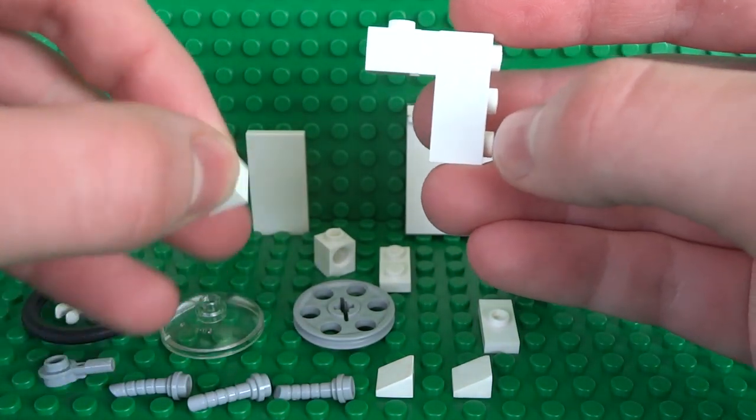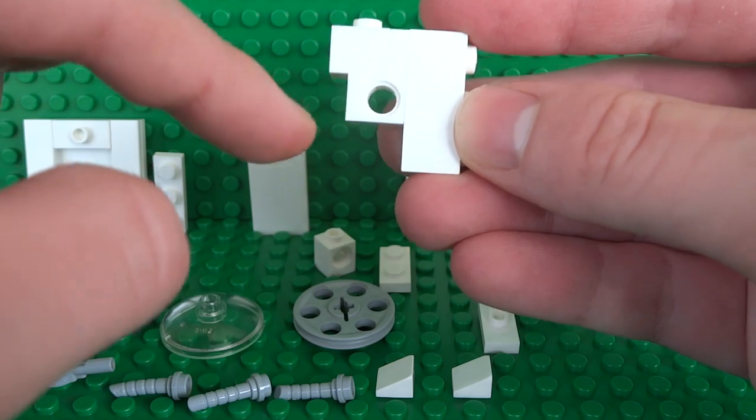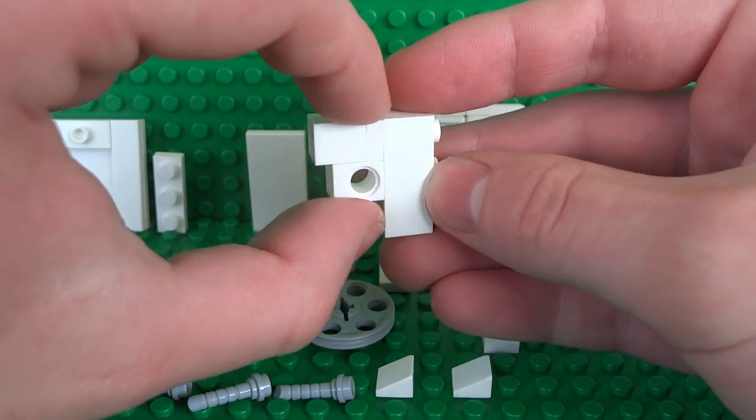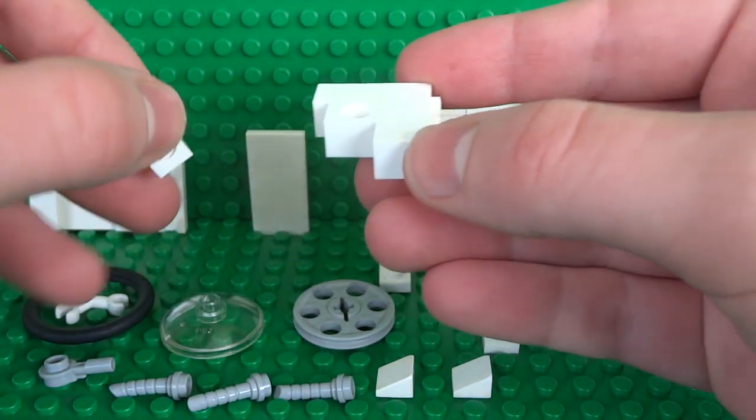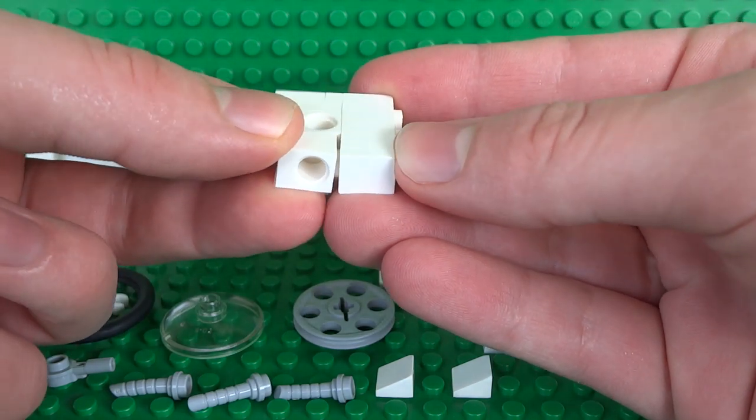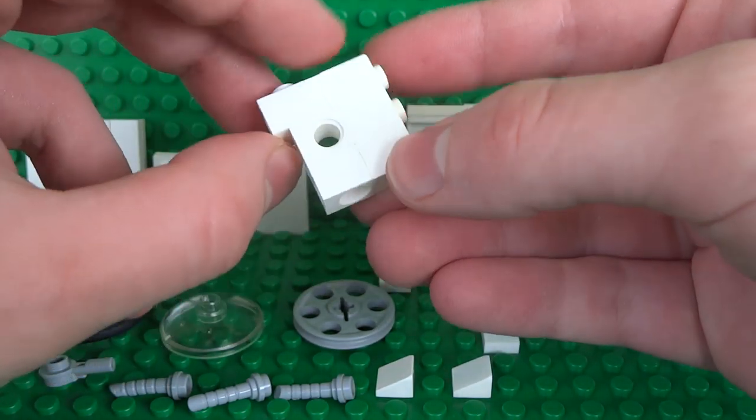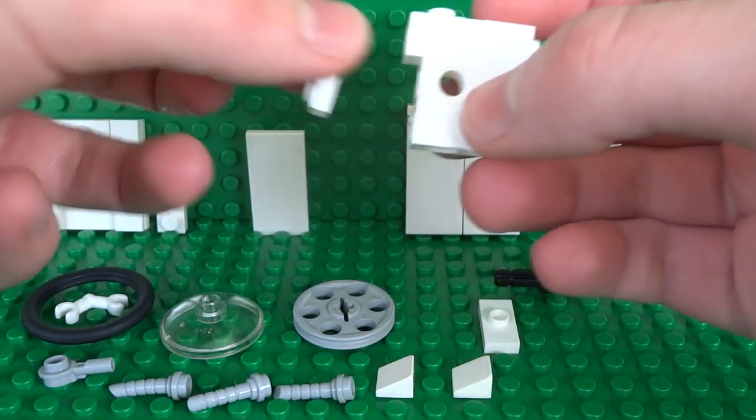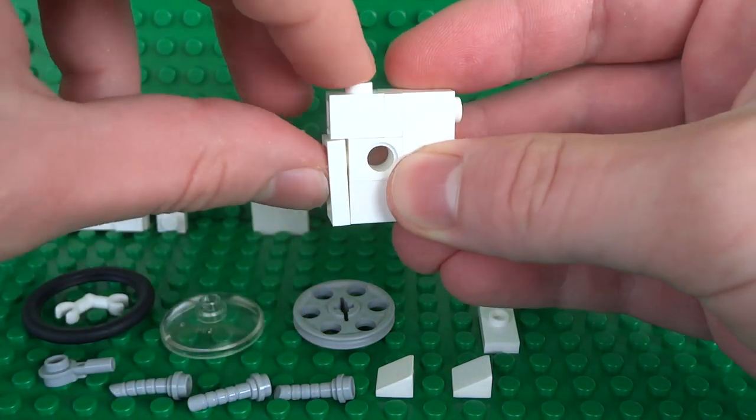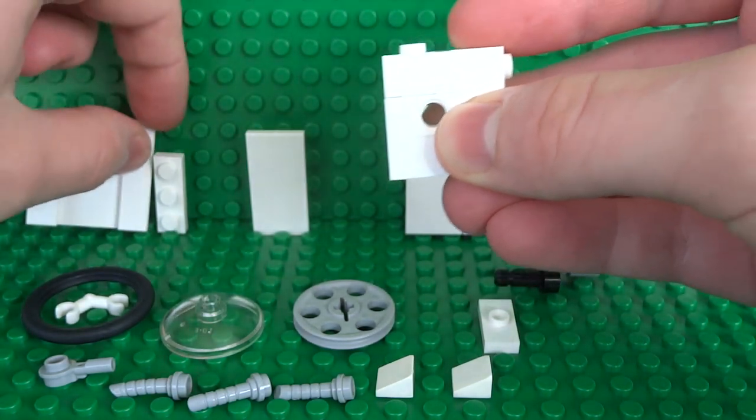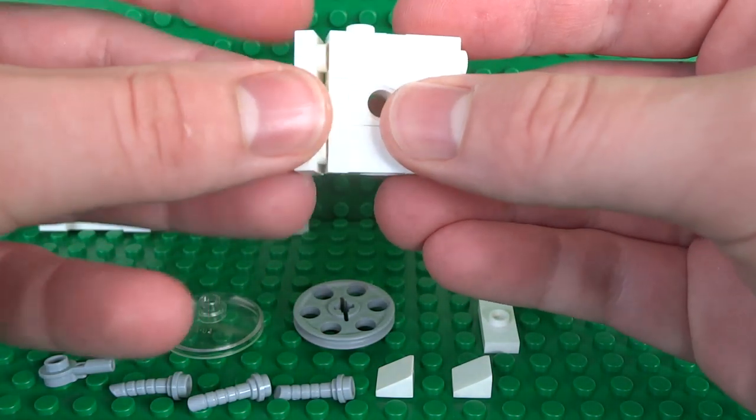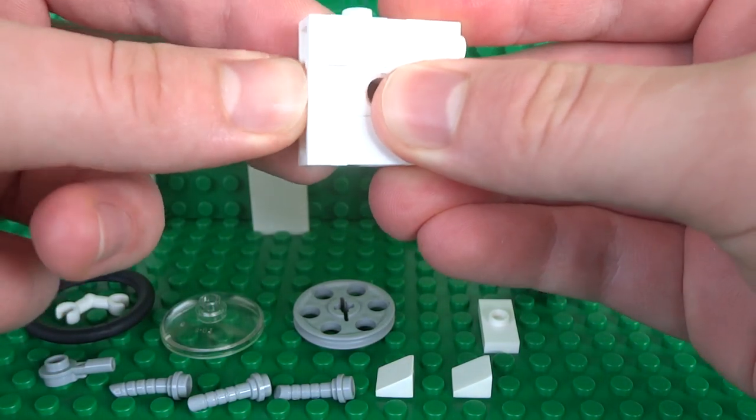And two 1x1 Technic bricks. One with the Technic hole facing just like that. And the other one with the Technic hole facing downwards. So in both directions there. Then we can secure this in place with a 1x2 plate to fill in the gap. And a 1x3 plate just to build up some extra length.